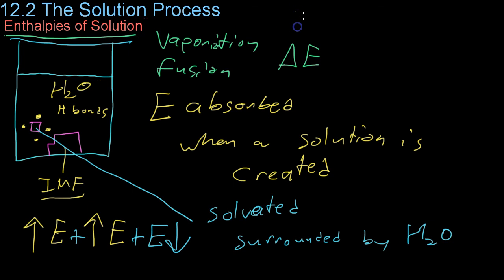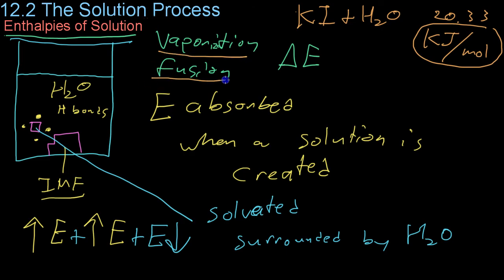So for example, potassium iodide, when dissolved in water, has a net enthalpy of 20.33 kilojoules per mole. And you'll notice that the units we use are similar to the molar enthalpies of vaporization and fusion.